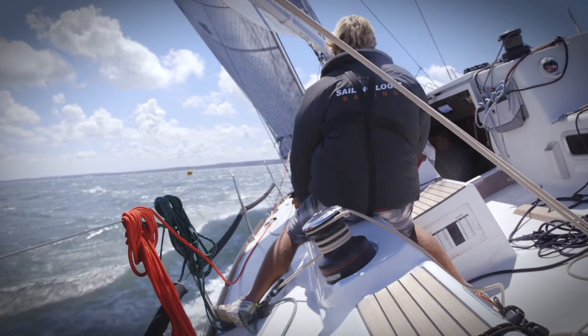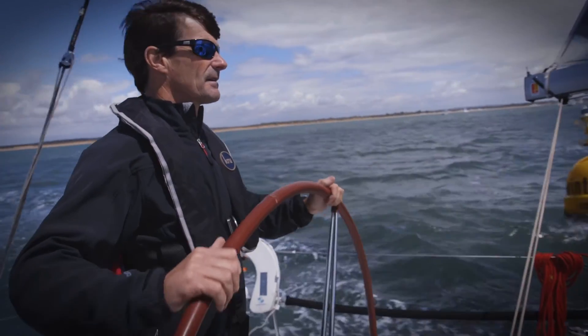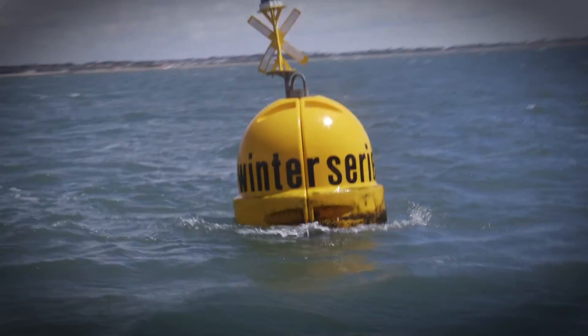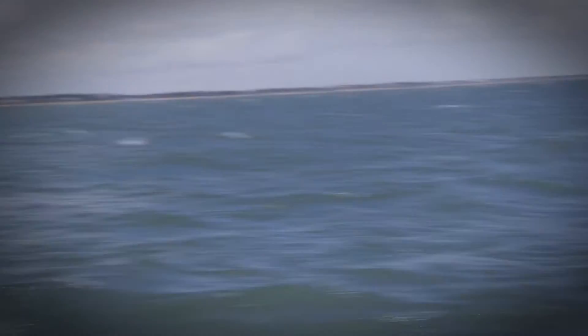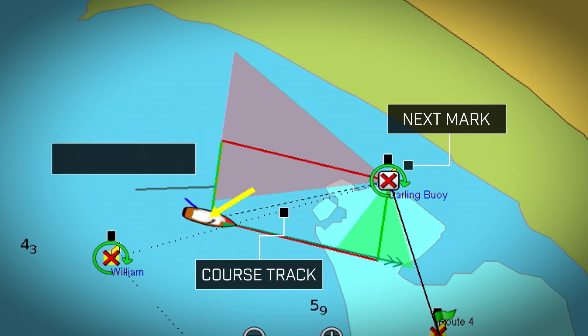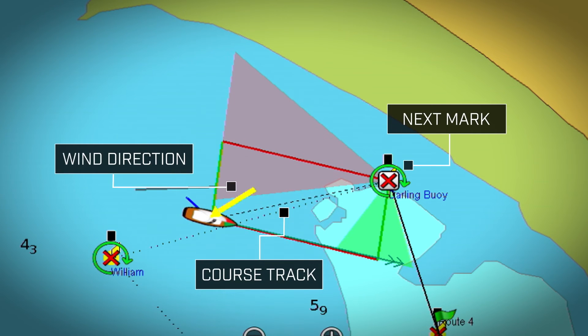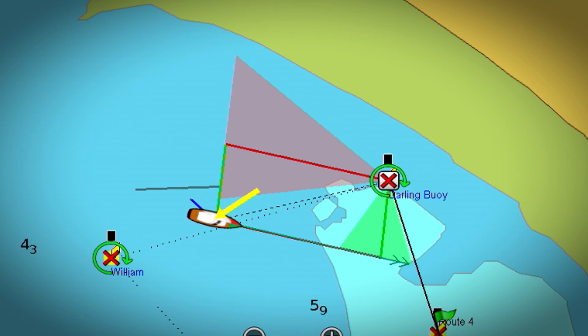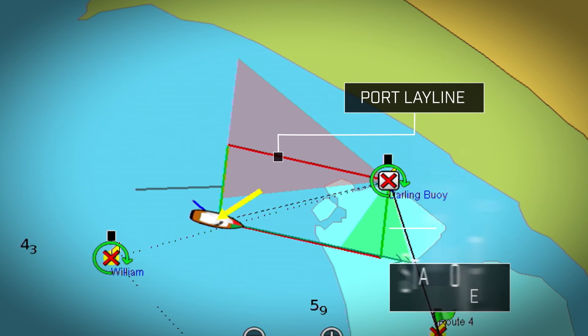Working closely with the boat's tactician, the skipper can tack at the optimal time to get round the mark as quickly as possible. When racing, it is obviously advantageous to tack on favourable wind shifts. Lay lines are an extremely useful tool for the racing sailor — they use your optimum upwind and downwind angles to show you when you will lay the mark on the opposite tack or jibe.